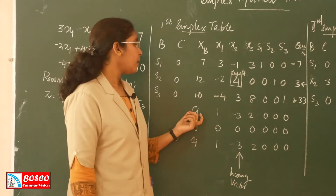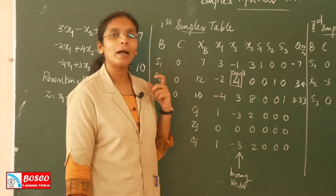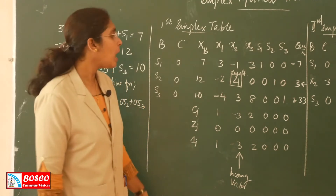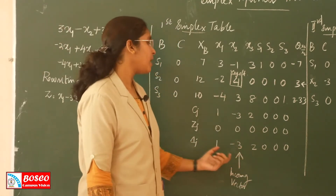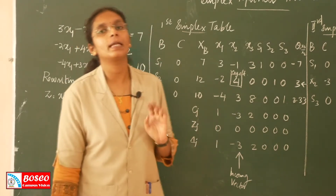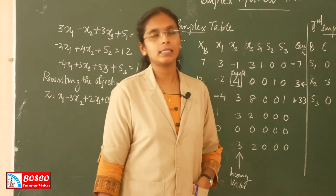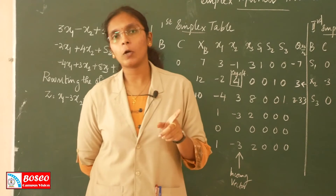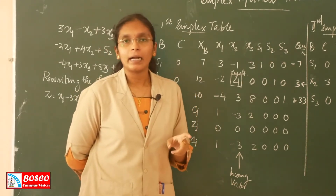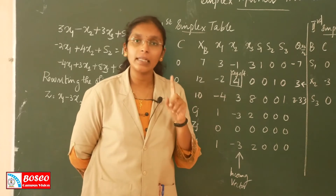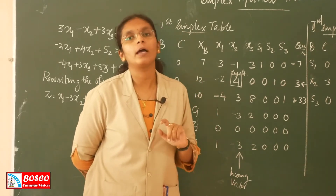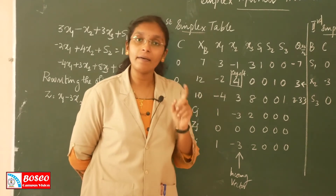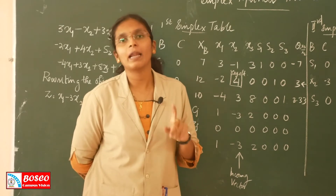In the initial simplex table, we compute Cj, Zj, and delta J values for each column. We have to test the optimality condition. In Type 1 problems — maximization with less than or equal to constraints — the optimality condition is reached when all delta Z values are either 0 or negative.